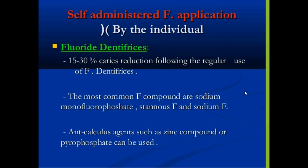Anti-calculus agents such as zinc compounds or pyrophosphate can be used in combination with fluoride in toothpaste to reduce the deposition of calculus on the tooth surfaces.